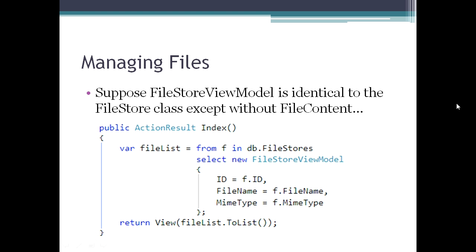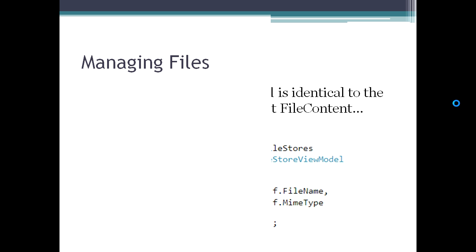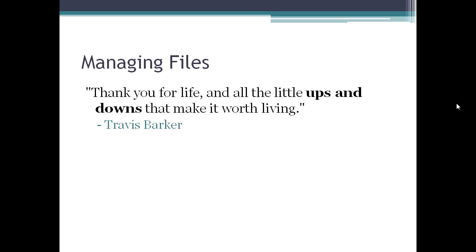With a FileStoreViewModel that's identical to FileStore except without the file content property, we can do a LINQ query selecting from the FileStores DbSet and projecting into a new view model object with only the ID, file name, and MIME type. LINQ is smart enough that the generated SQL will only select those three fields from the table, not loading the file content at all - making it dramatically faster and much better for performance when you don't need the content.